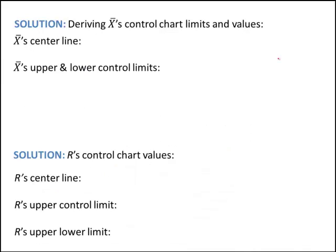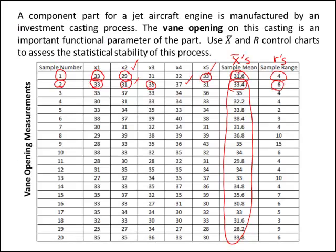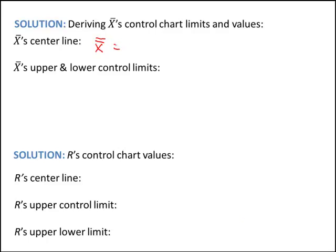On the next page, I want to show you not only the values of the upper and lower control limits, but how to actually derive and calculate them. The center line of the x-bar chart is just the mean of the sample means, which we call x-bar-bar. If you take all of these means, sum them up, and divide by 20, you get the overall mean — or x-bar-bar. I already did this: I added all those values up, divided by 20, and got 33.32.